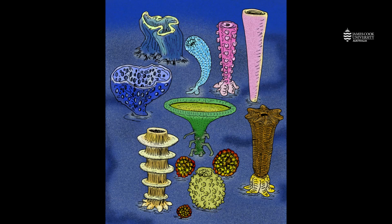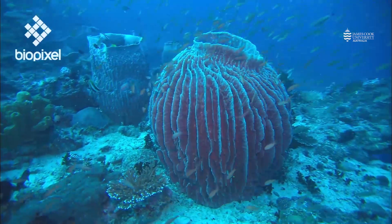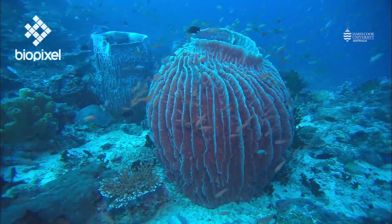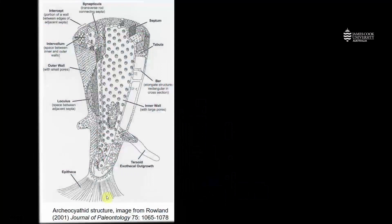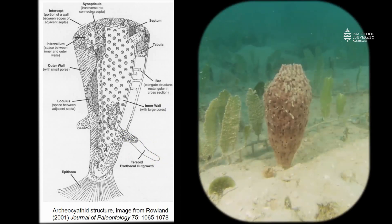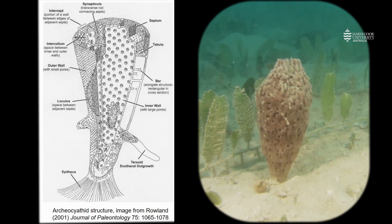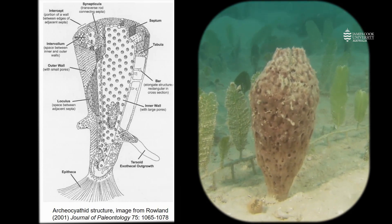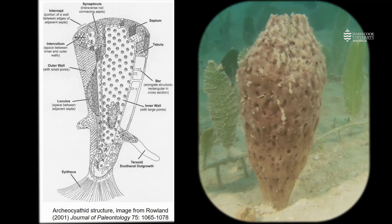Another ancient reef builder was an archaeocyathid sponge, and they look quite similar to some of the sponges we see living today. They have an attachment to the base, a spongy structure with pores for pumping water in and out, and some external growths linking different units of the sponge together. So organisms that look quite similar to the sponges we see on reefs today built reefs many millions of years ago.